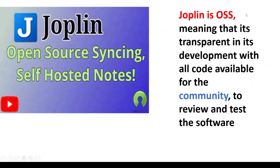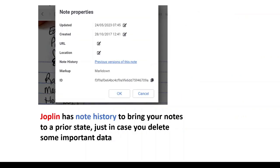Joplin is open source software, meaning it's transparent in its development with all code available to the community to review and test the software. Joplin also has note history to bring your notes to a prior state, just in case you delete some important data.